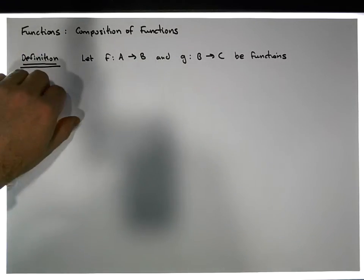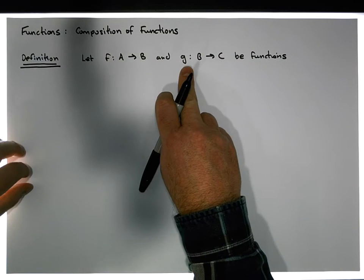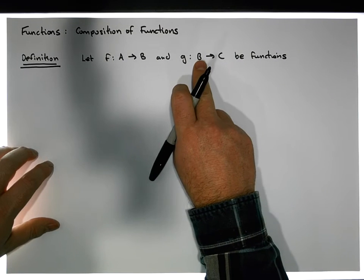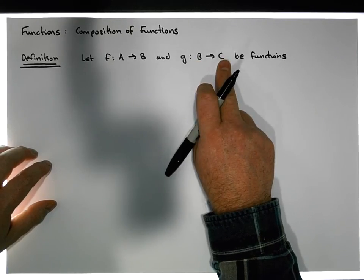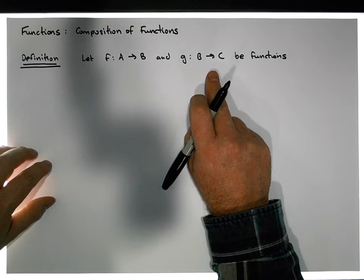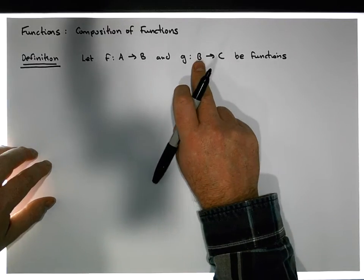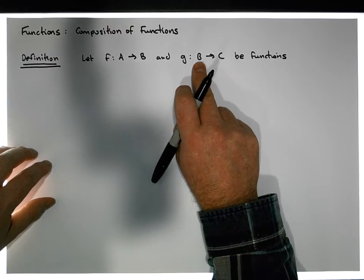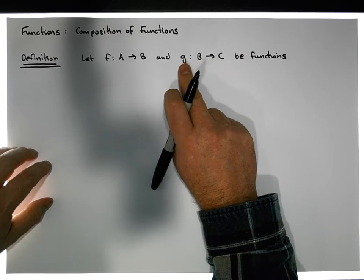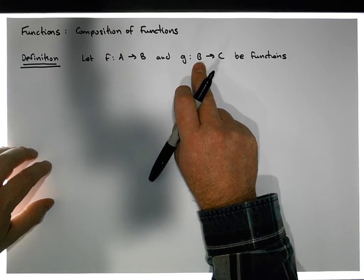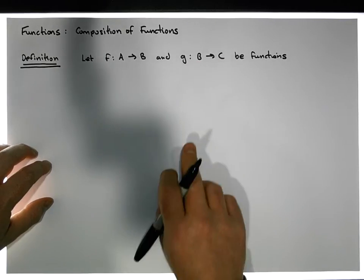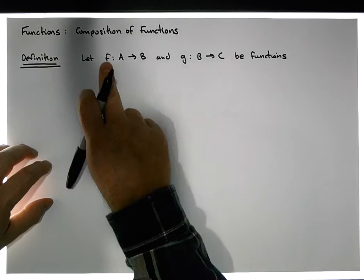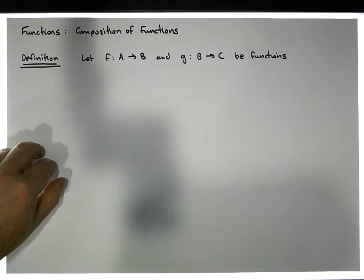Similarly, g is a function, which means that for every element of the set B in its domain, every value is taken to a value in C — that's the first condition. The second condition is that if we choose any two different values from B and apply the mapping, those two values must be taken to two separate values in C.